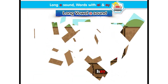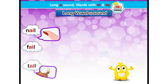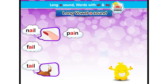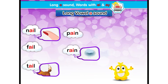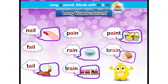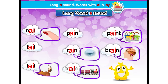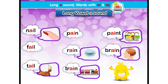Now some more words: nail, fail, tail, pain, rain, train, paint, brain. In all these words, A-I has a single sound. So now we know that A-I and A-Y have a long vowel A sound.